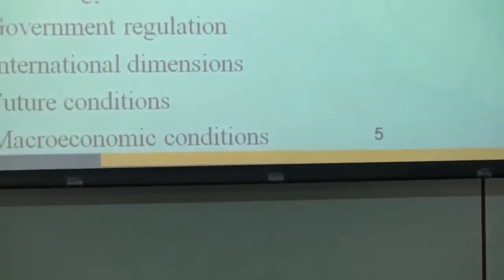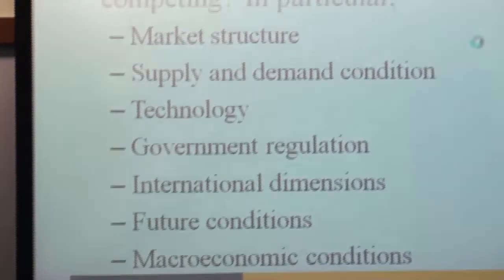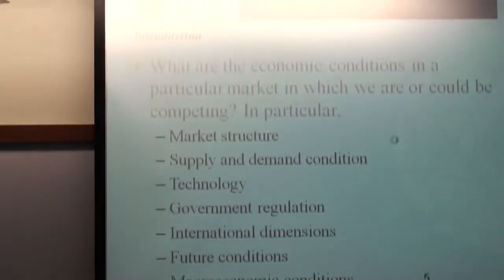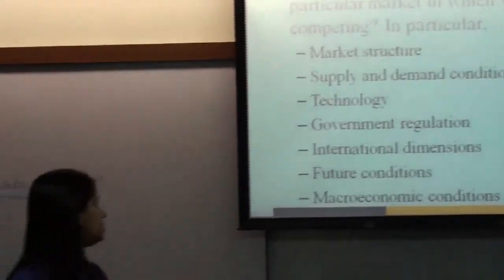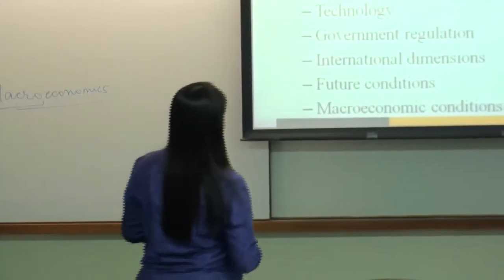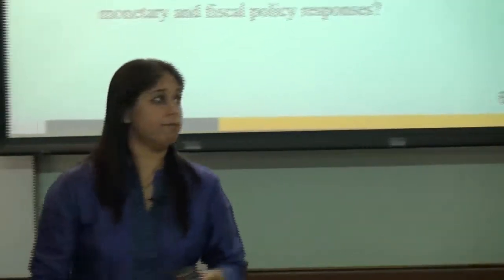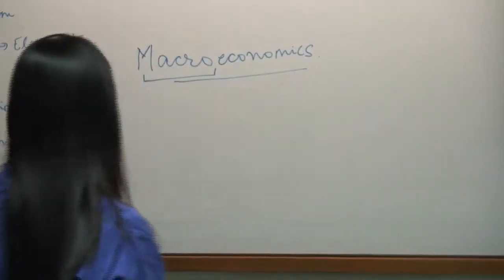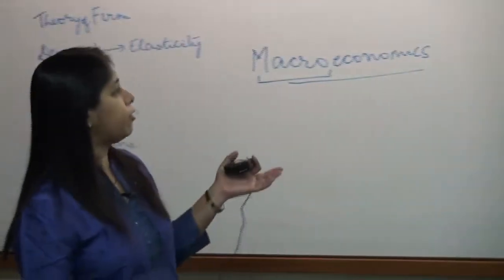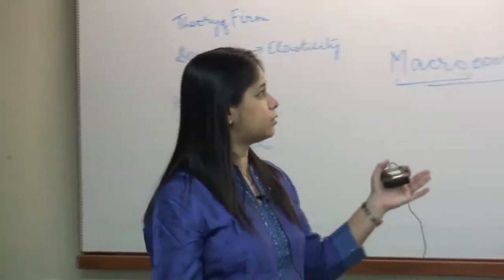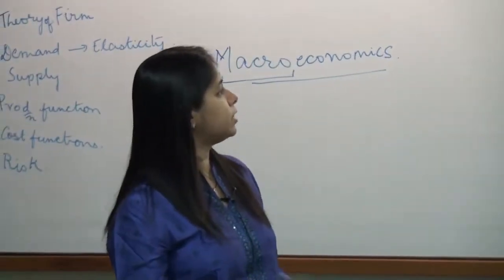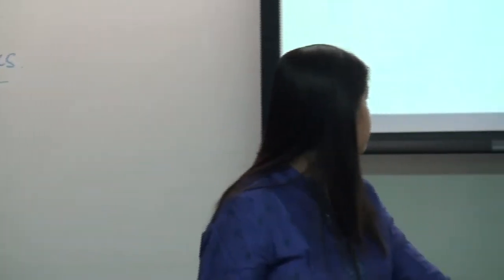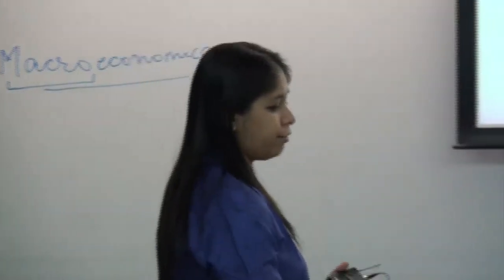Various economic conditions in a market include market structures, supply and demand conditions, technology, government regulation, international dimensions, future conditions, and various macroeconomic conditions. Macroeconomists are concerned with explaining short-term economic fluctuations manifested in movements of output and employment, and how the government should respond through monetary and fiscal policy.